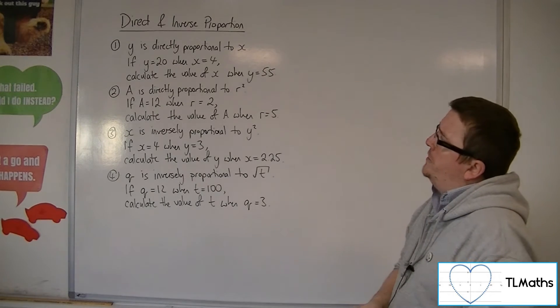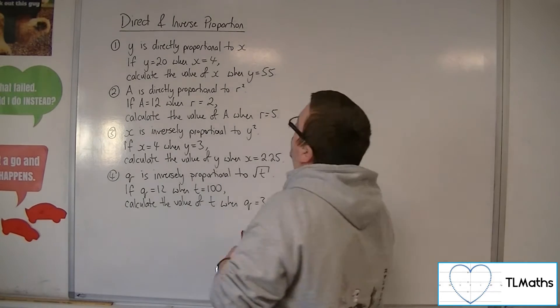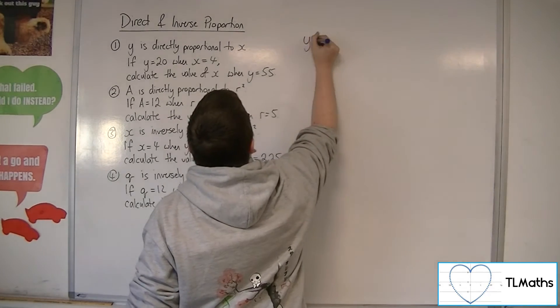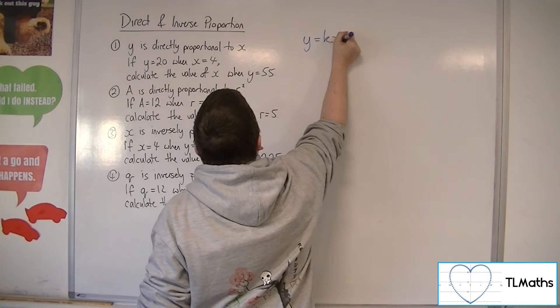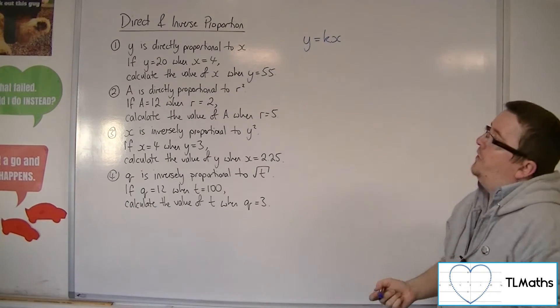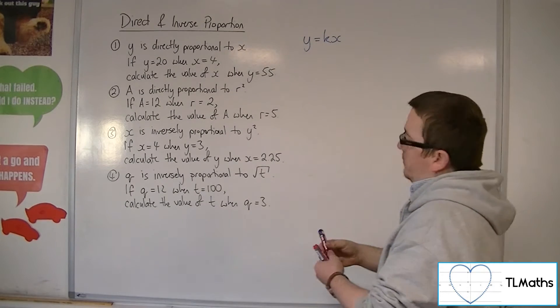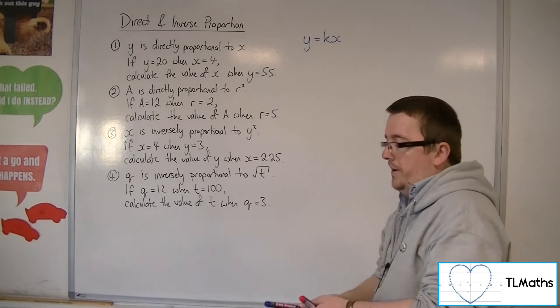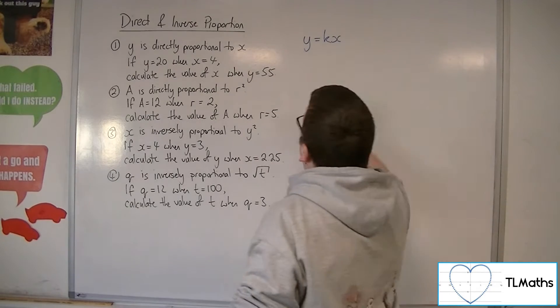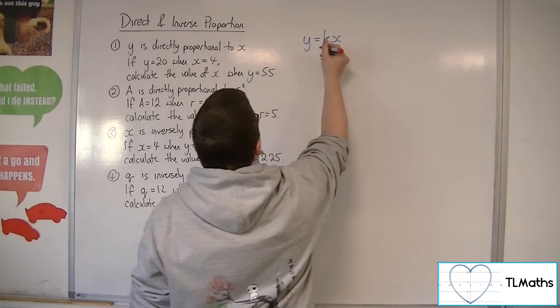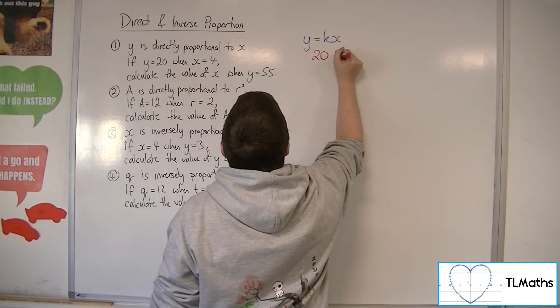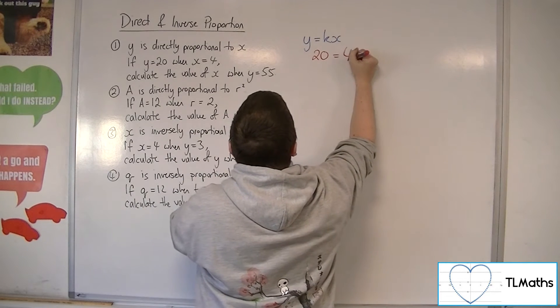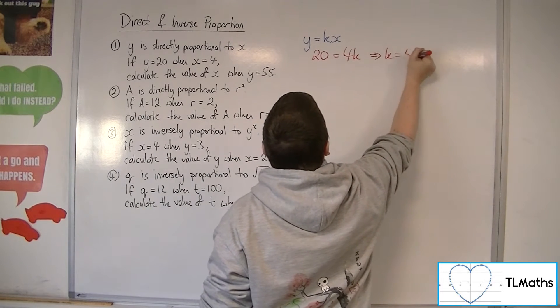So for number 1 we've got y is directly proportional to x, which means we can write down that y is equal to kx. If y is equal to 20 when x equals 4, well that next line allows us to find a little bit more out about this. We should be able to find k now. So 20 must be equal to 4k, so k must be 5.